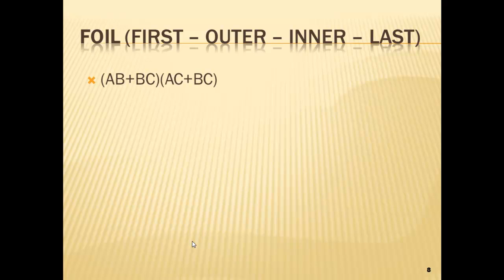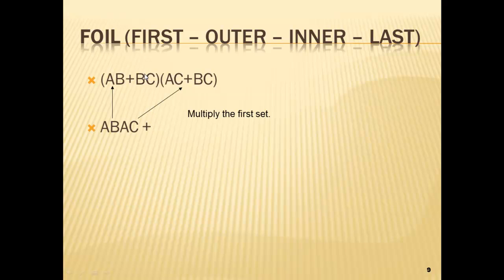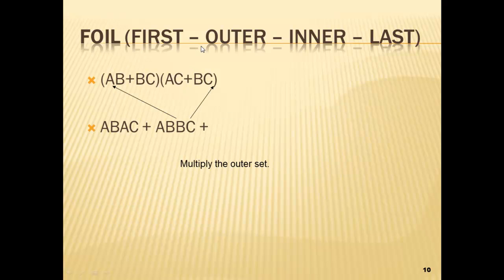You may remember from algebra doing FOIL — First, Outer, Inner, Last. FOIL is just a method of reminding you to multiply certain terms so you won't forget anything. It's taking the first term times both of the second group, then the second term times both of the second group. So: AB times AC, AB times BC, BC times AC, and BC times BC — you're just taking AB times both and BC times both.